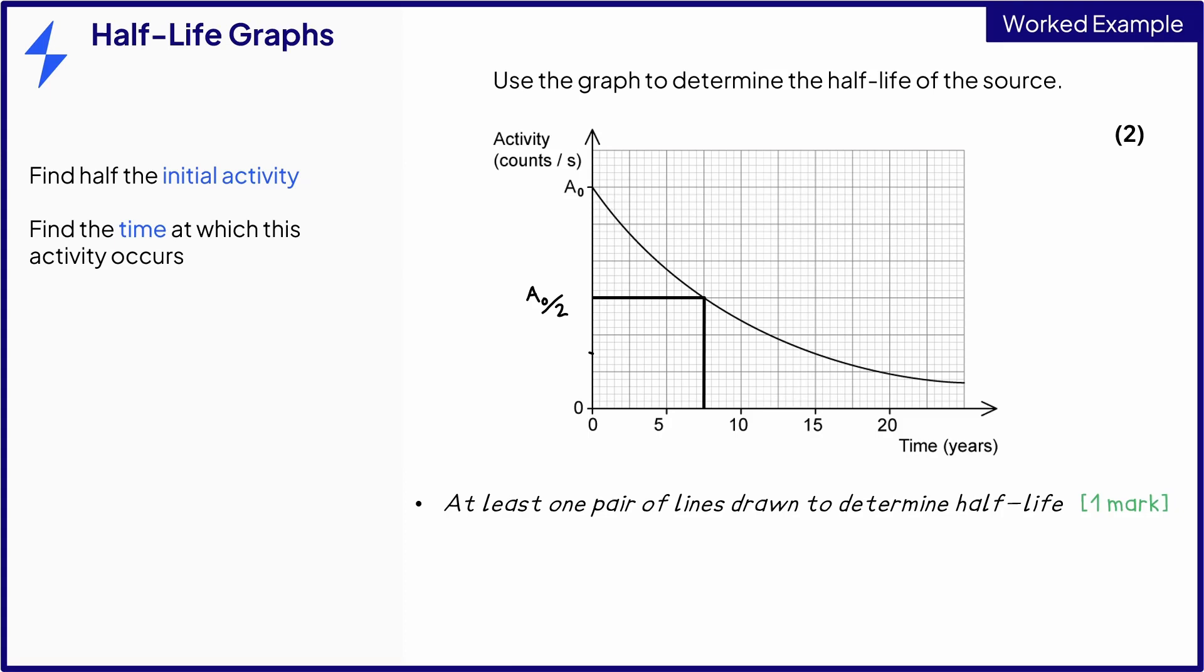This is for drawing a pair of lines on the graph. Remember, you are asked to use the graph, so make sure you annotate it. Next, we read the time on the x-axis and determine the time taken for the activity to half, which is 7.5 years. This is the definition of half-life, so we can now say that the half-life is 7.5 years for the second mark.